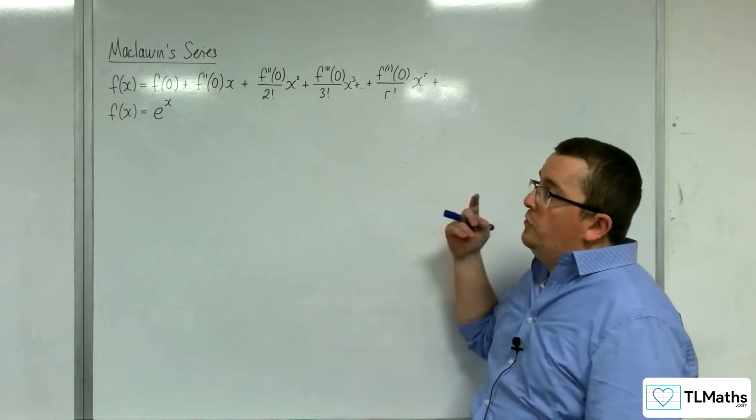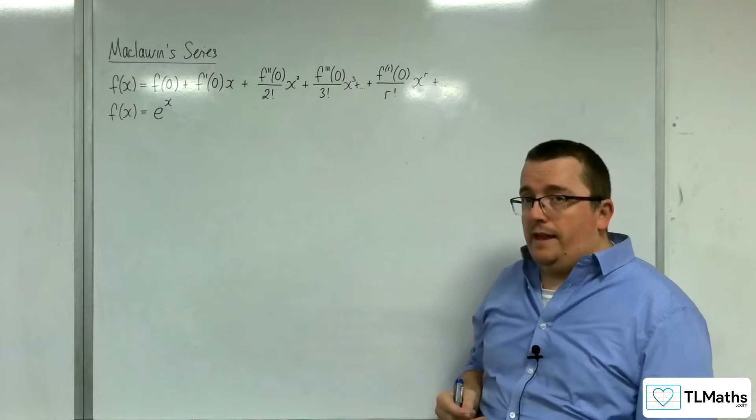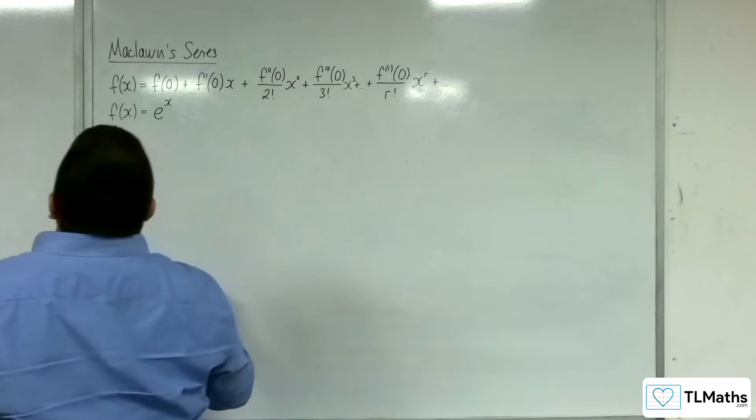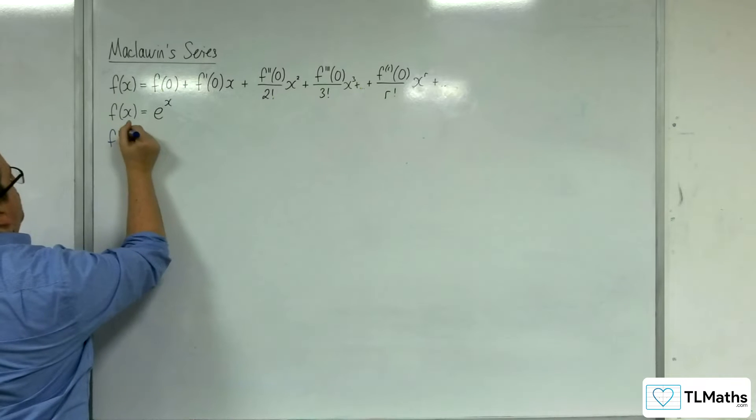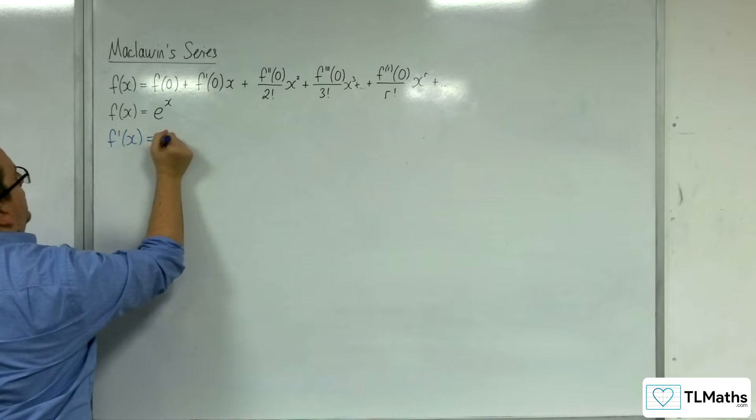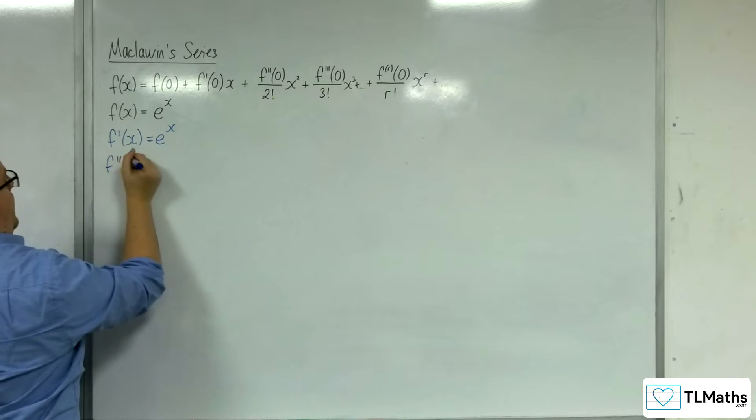In this video, we're going to find the Maclaurin series of f of x equals e to the x. First of all, differentiate for enough terms. This one's quite easy.